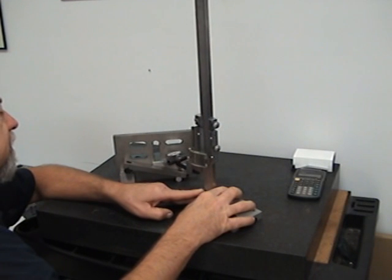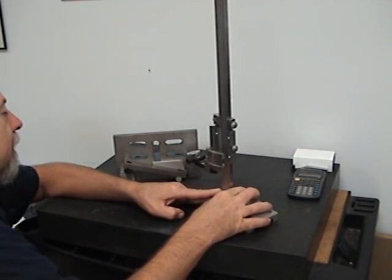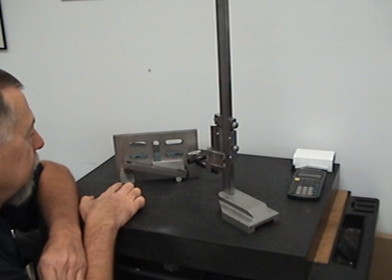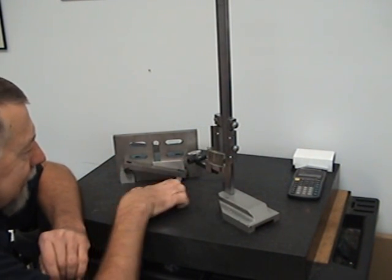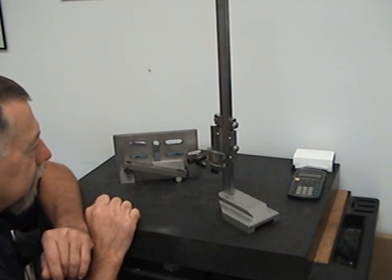And we do have zero, zero—there is no movement at all. So our gauge block stack is correct. 1.2941 is the correct gauge block stack for a 5-inch sine bar checking a 15-degree angle.